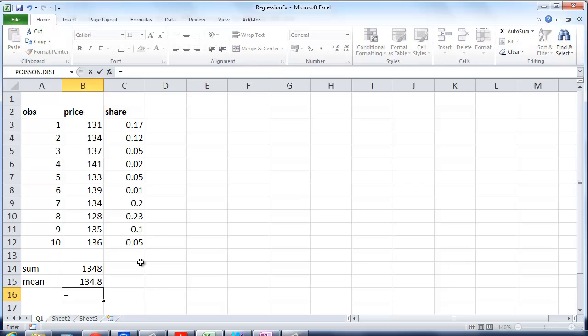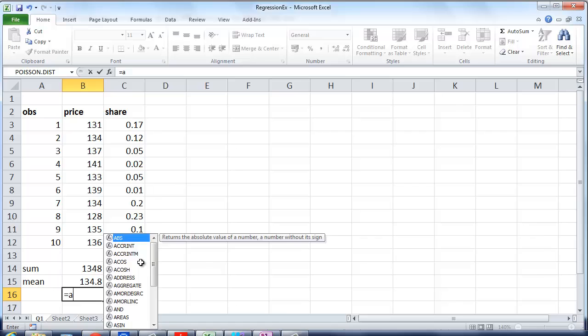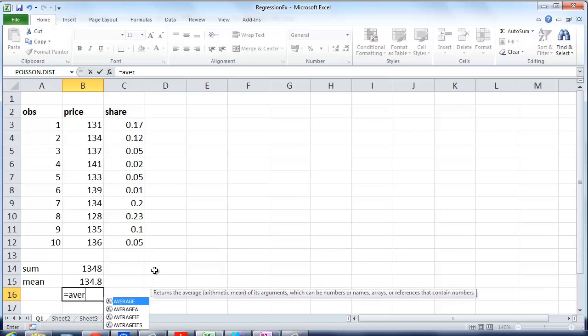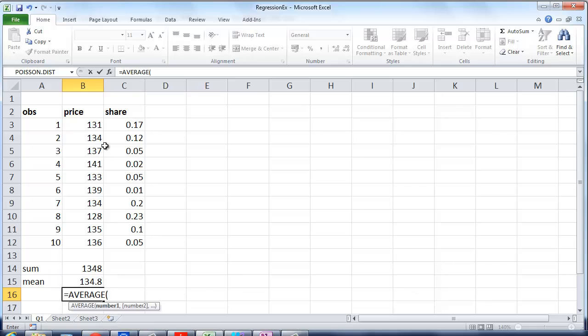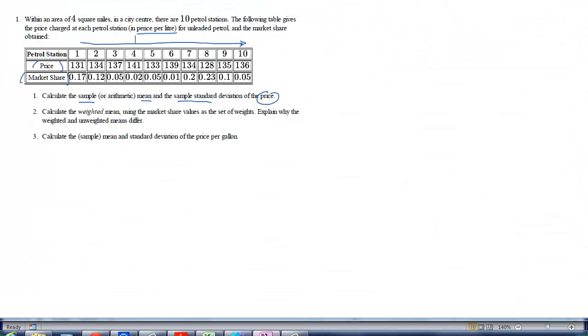I could, of course, also have used the built-in function in Excel. That's the average function. So I could have chosen average and highlighted all the data. And I get exactly the same result. But I'll do it by hand. We want to understand what we are doing. So 134.8.